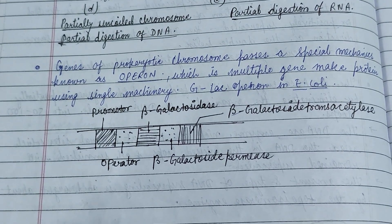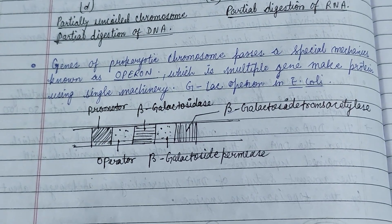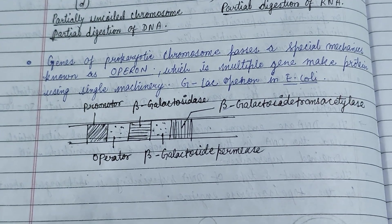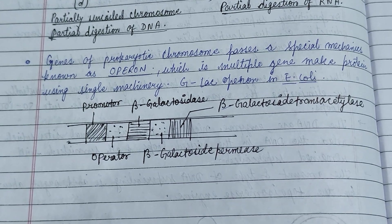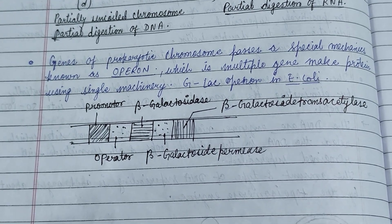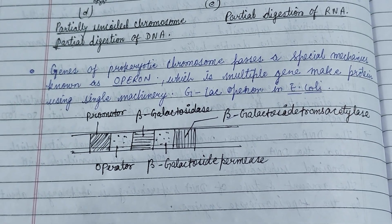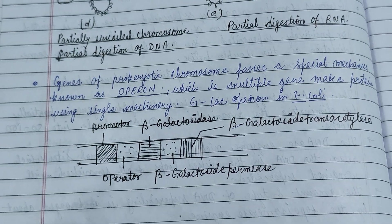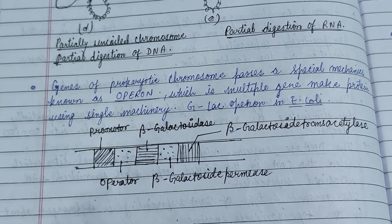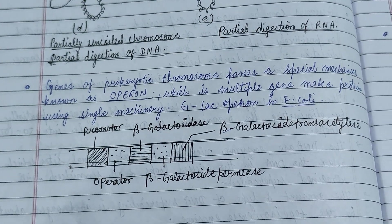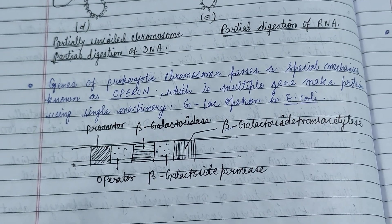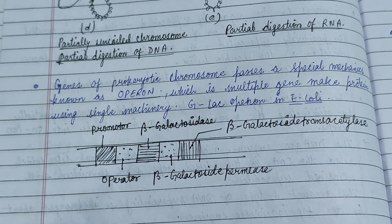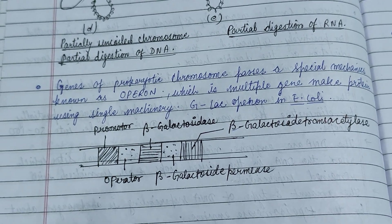In this sequence there is the operon sequence: promoter, beta-galactosidase, beta-galactosidase transacetylase, and beta-galactoside permease. This is a general view of the organization of the prokaryotic chromosome — I hope you will like it and follow it.